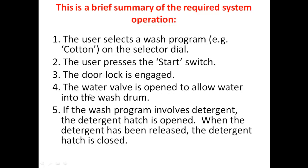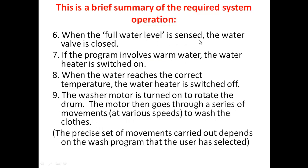The water valve is opened to allow water into the wash drum. If the wash program involves detergent, the detergent dispenser is opened. The soap will enter only in the required state — until then it will not be opened. Once a small amount is taken, it will be closed again. When the full water level is sensed, the water valve is closed. If the program involves warm water, the water heater is switched on. When the water reaches the correct temperature, the water heater is switched off. So all this goes in sequence, and next the washer motor is turned on.